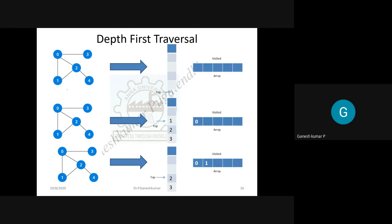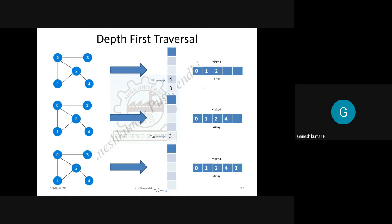For depth-first traversal, you also start the same way — zero is printed. Then adjacent nodes are pushed onto the stack: three is pushed, two is pushed, and one is pushed. When you pop elements, you print them in the visited array. If node two has an adjacent node four, four is pushed onto the stack and then popped and printed.